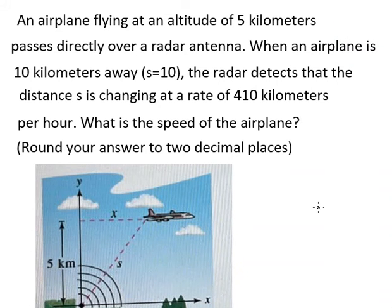Hello everybody, so today I want to talk about calculus. The topic today is about related rate of change. Now I want to show you how to answer: an airplane flying at an altitude of five kilometers passes directly over a radar antenna.